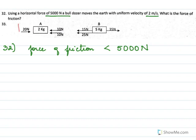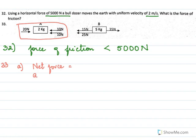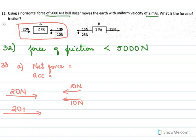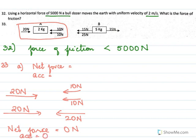In case 1, we need to find the net force and acceleration. There is 20 Newtons in one direction, and in the opposite direction 10 Newtons plus another 10 Newtons, which is also 20 Newtons. So the net force will be zero, and if net force is zero, acceleration will also be zero — there will be no acceleration.